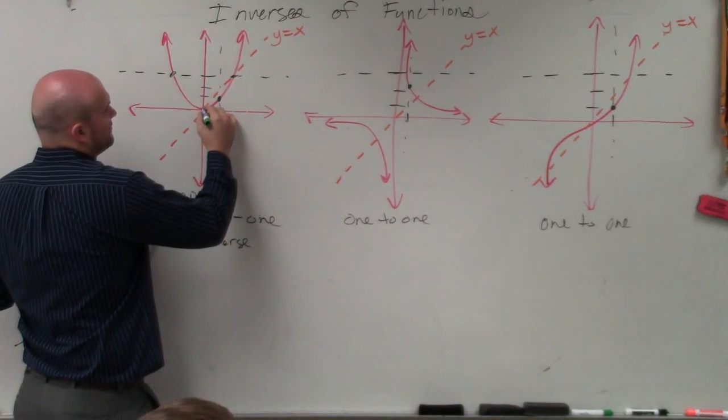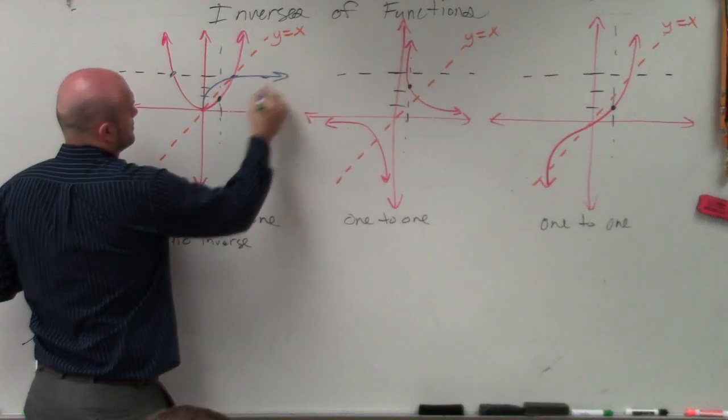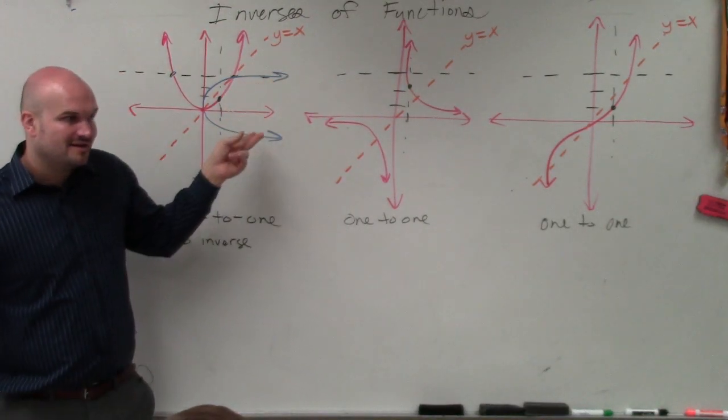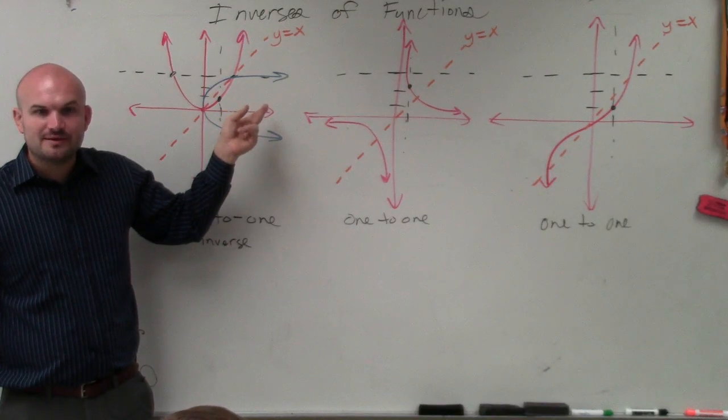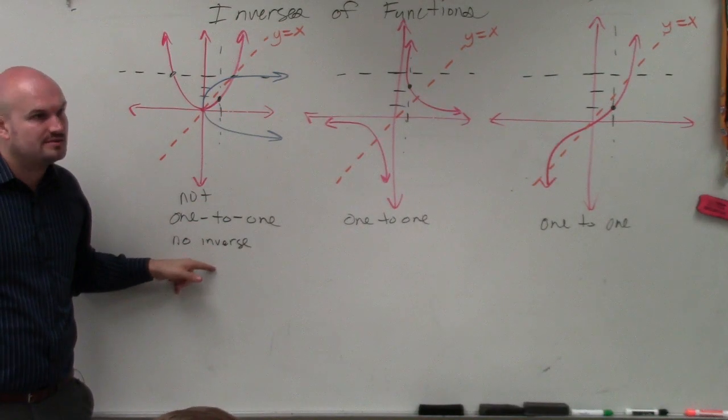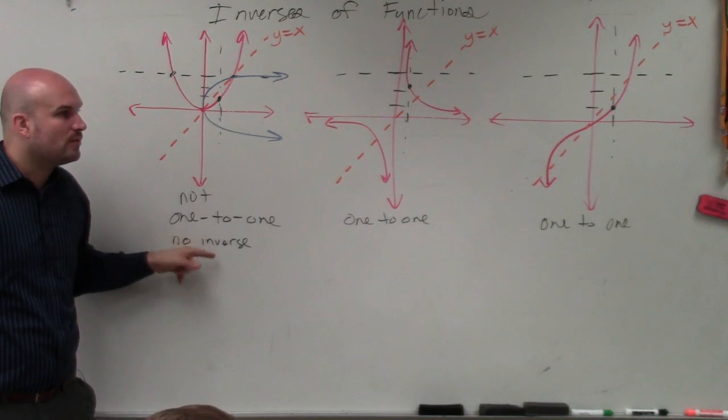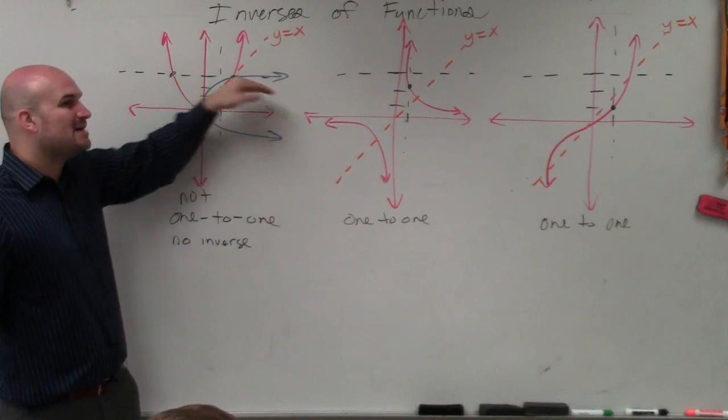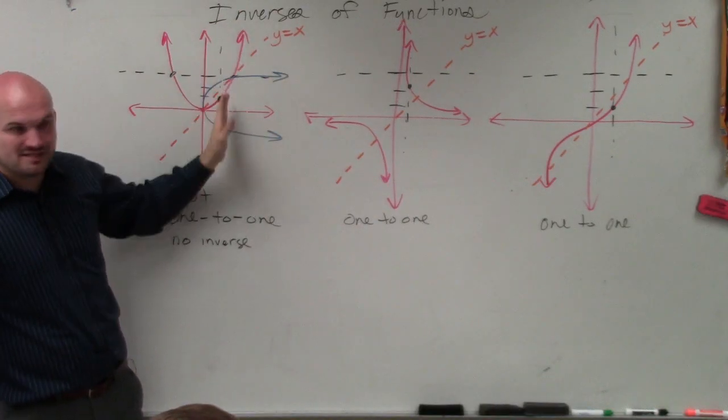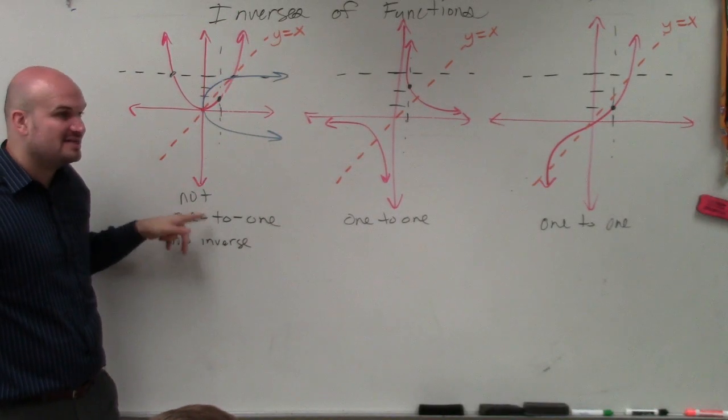And what you guys would see if you reflected this, the reflection here is not a function, right? Do you guys agree with me? That's why this doesn't have an inverse that's a function. Do you guys see how the one-to-one property works? When it doesn't pass the horizontal test and you reflect it, it doesn't pass the vertical test. That's why we say it doesn't have an inverse.